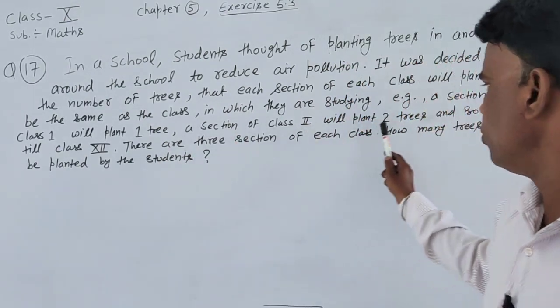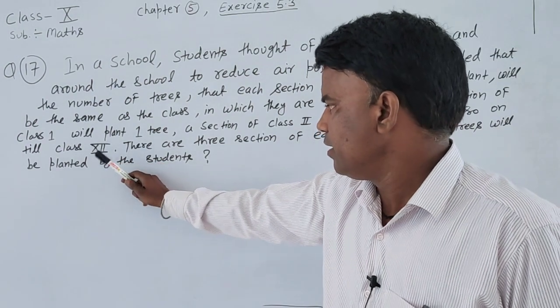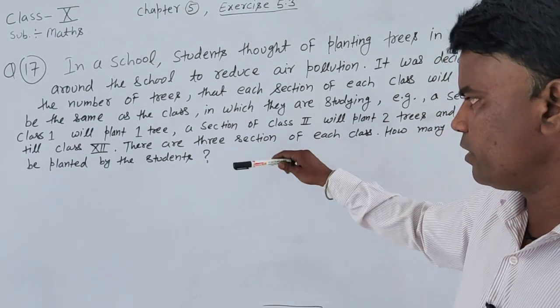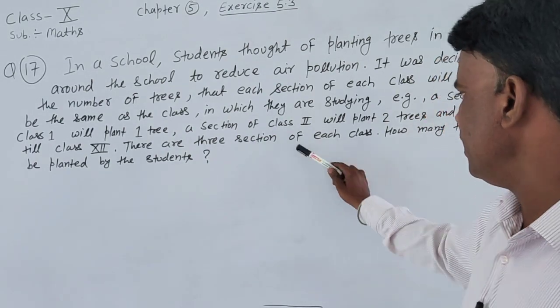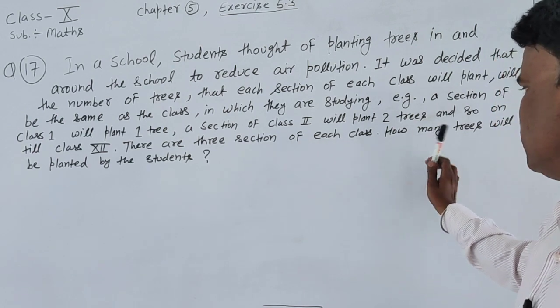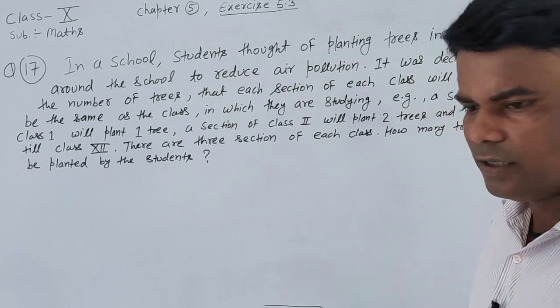Class 2nd, 2 trees. Class 3rd, 3 trees, and so on till Class 12th. There are 3 sections, 3 sections of each class.